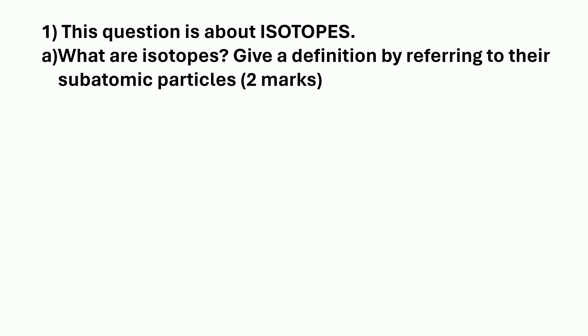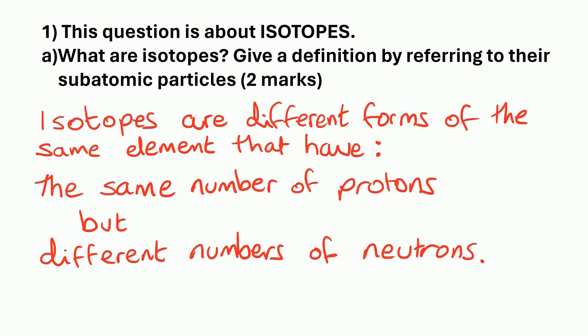So the answer to this question would be: Isotopes are different forms of the same element that have the same number of protons but different numbers of neutrons. So you get one mark for saying same number of protons and one mark for saying different numbers of neutrons.